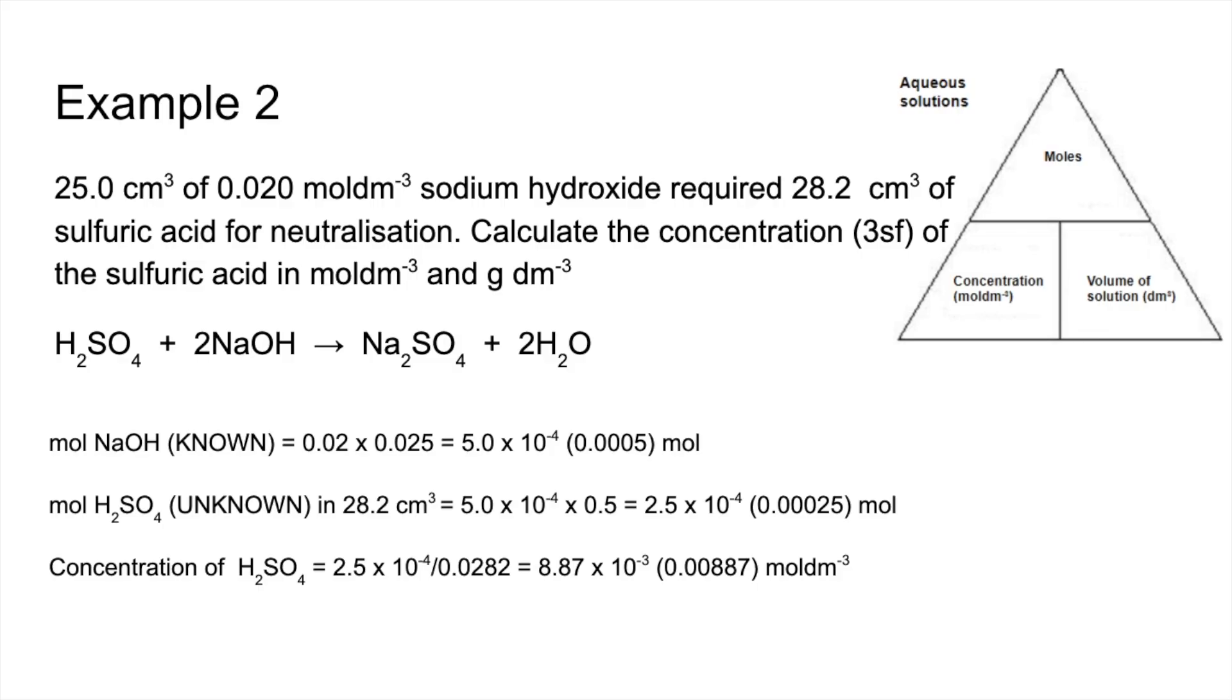And it comes out at 8.87 times 10 to the minus 3 moles per decimetre cubed. And then as grams per decimetre cubed, we just multiply those moles by the MR, which is 98.1. And we get 0.870 grams per decimetre cubed to three significant figures.